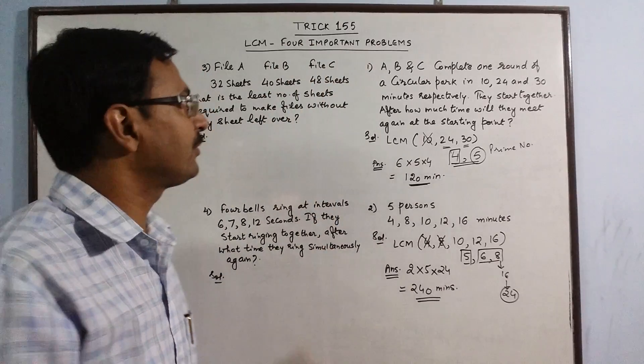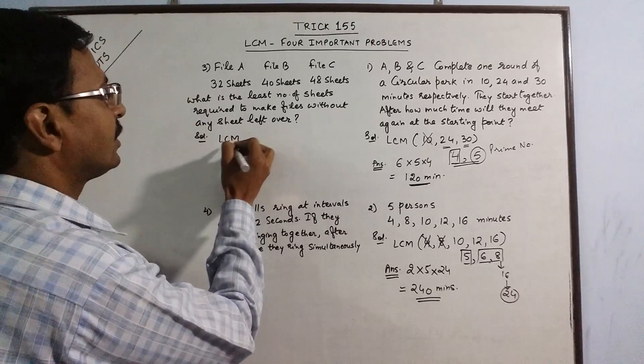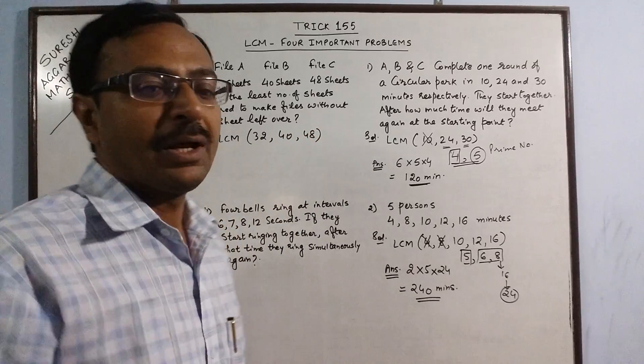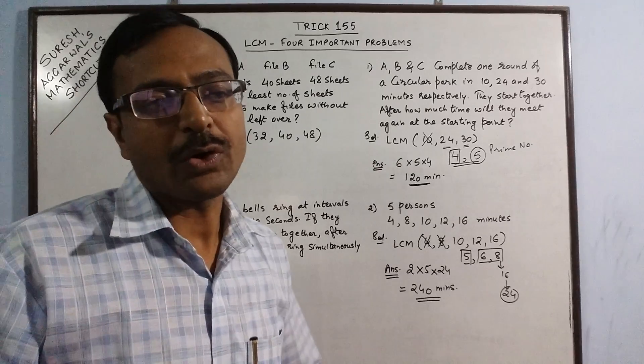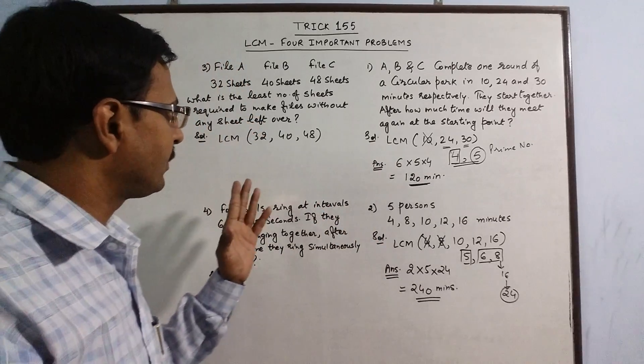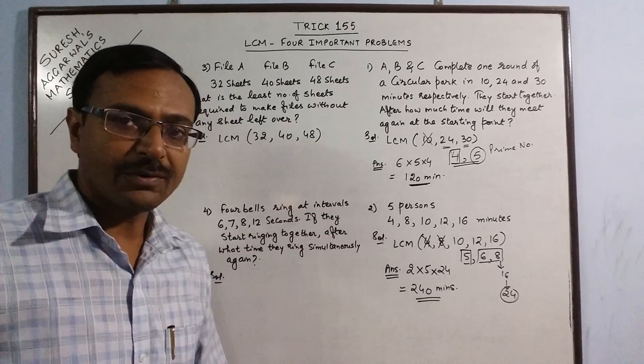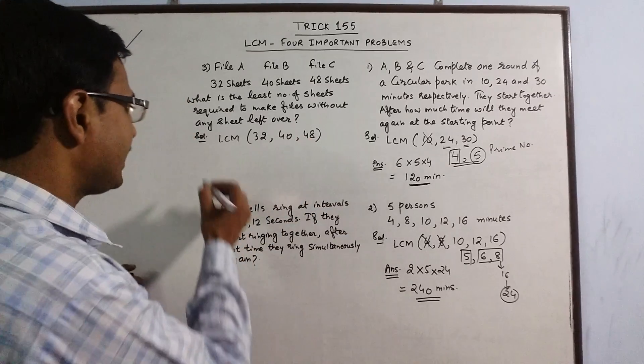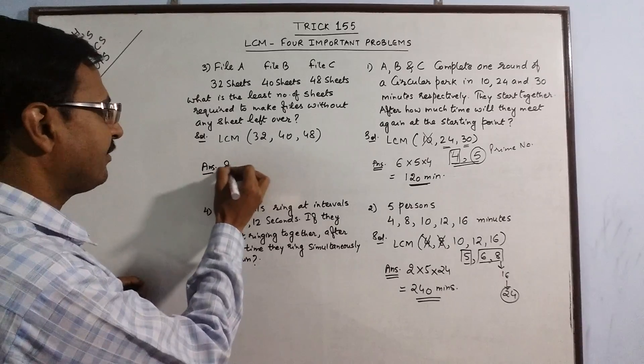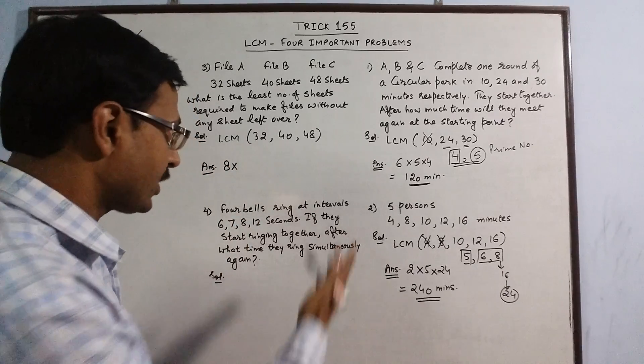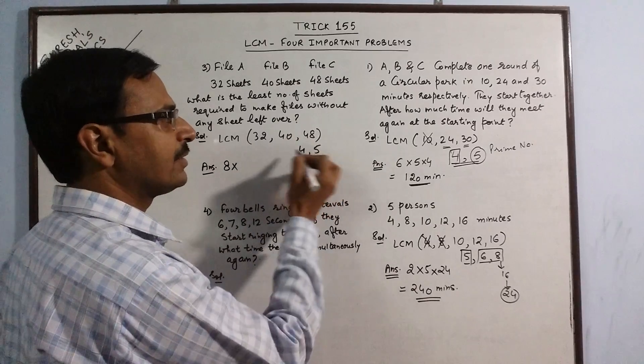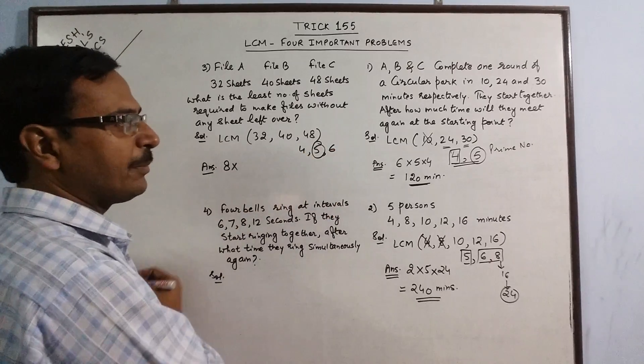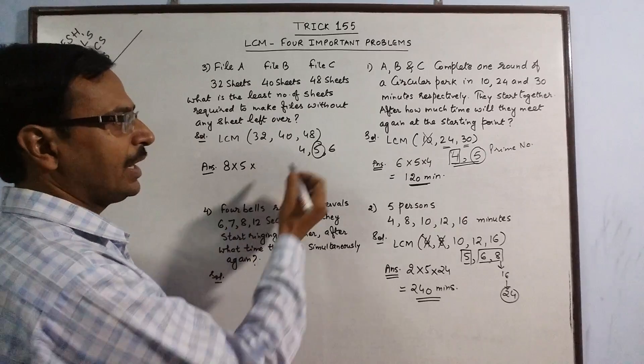The solution for finding the LCM of 32, 40, and 48. See these 3 numbers. What is the highest number by which all 3 numbers are divisible? If you observe closely, 8 fours are 32, 8 fives are 40, 8 sixes are 48. So 8 is one of the factors. In the answer I will have 8 as one of the factors. What is left behind is 4, 5, and 6. This is a prime number. So the prime number will come in the answer. And 4 and 6.